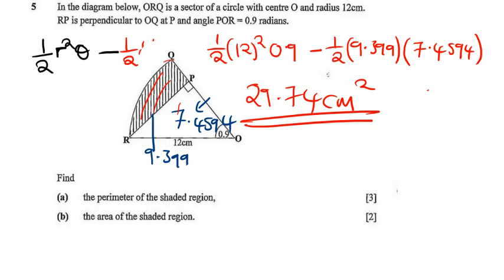So key takeaway points: half r squared theta for the area of the sector, and then the arc length is r theta.